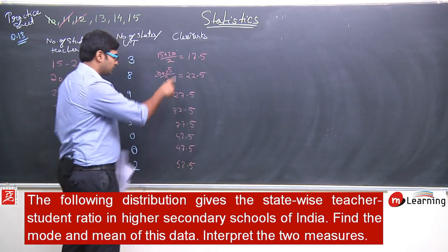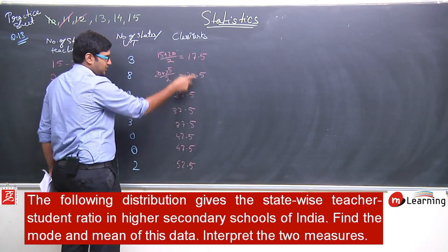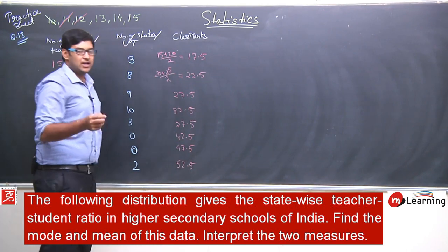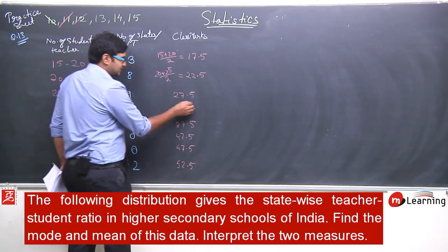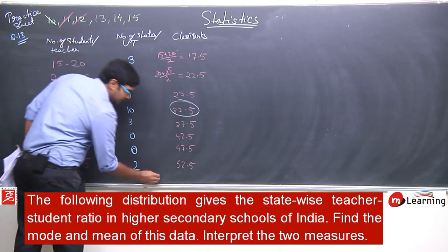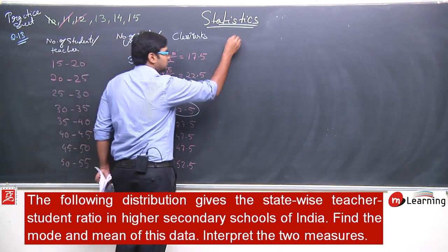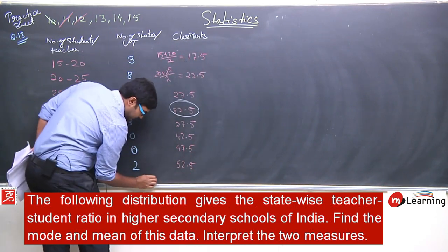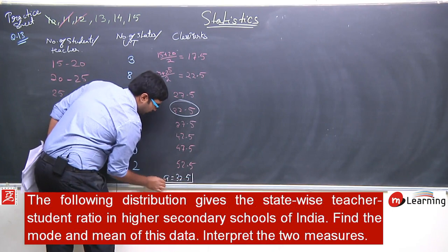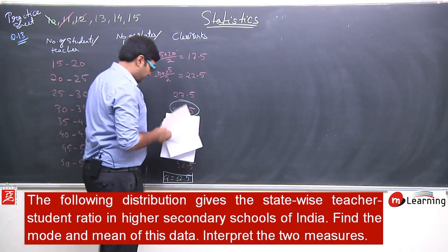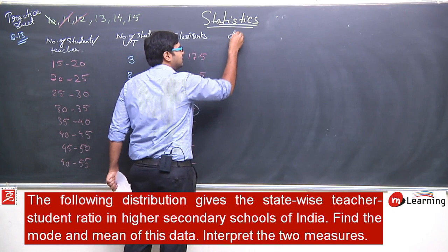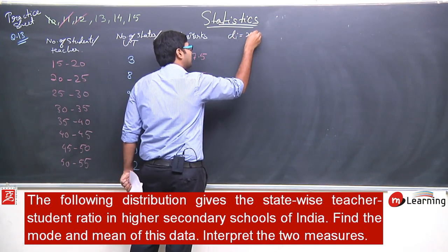We have 8 observations, so let us take 32.5 as the assumed mean. So a = 32.5. With the class marks, I can calculate the deviation d_i as x_i minus a.